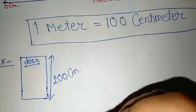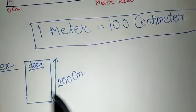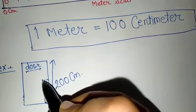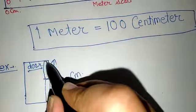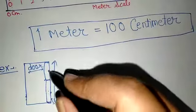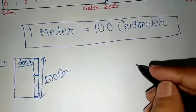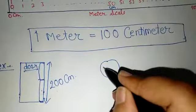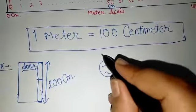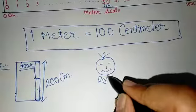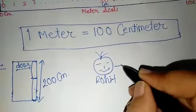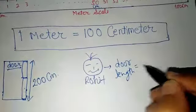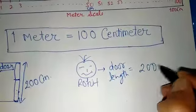Imagine the door has a length of 200 centimeters. You would have to use the meter scale twice — once here and once here. Your teacher has asked: what is the length of the door? There was a student named Rohit standing there. Rohit said, 'Ma'am, the length of my door is 200 centimeters.'